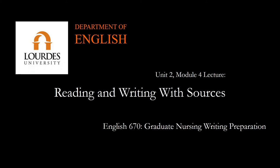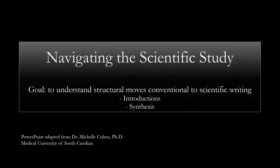So we've searched the library, we've found sources, we've evaluated them, and we've stored our references in a reliable location. What's next? How do we write a research paper? And how do we write with our sources? Let's talk about the structural moves that are conventional to scientific writing, because when we understand how these papers are built and what the purpose of each section is, it will help us to navigate the writing process and understand how to incorporate sources into our writing effectively.